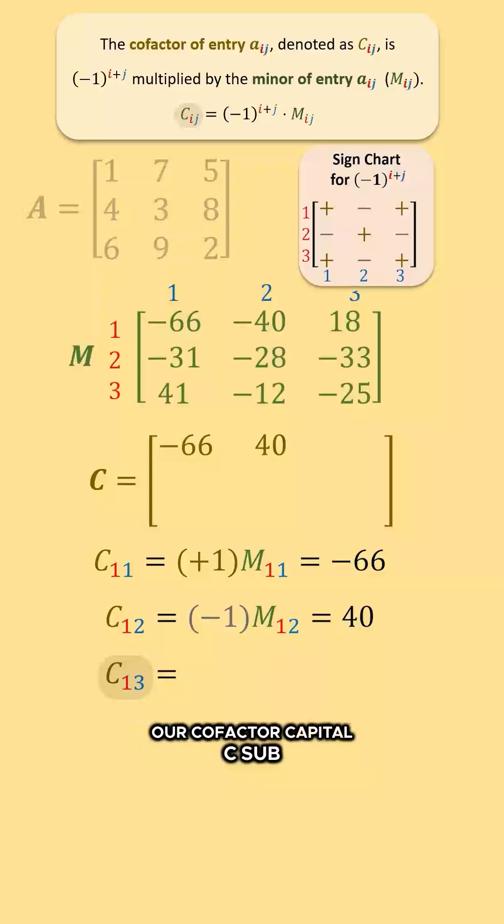Our cofactor capital C sub 13 is equal to positive 1 times capital M sub 13, which equals positive 1 times positive 18, which is equal to 18. 18 goes in this position.